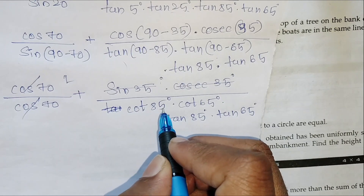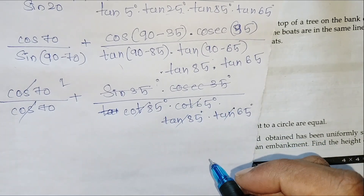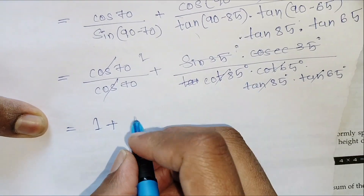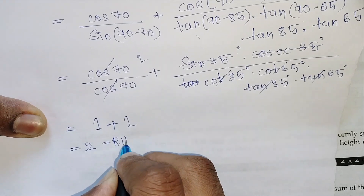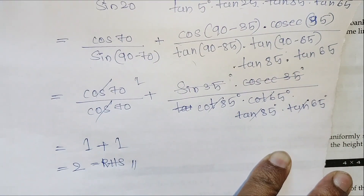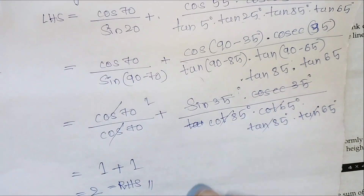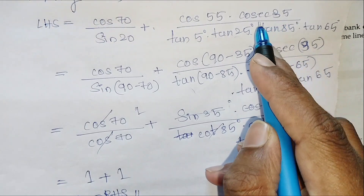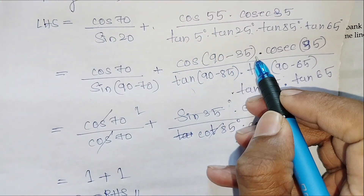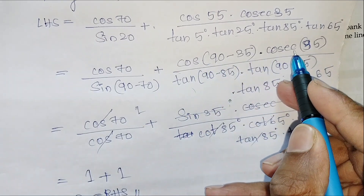Also, cot 85 into tan 85 can be cancelled, and cot 65 and tan 65 can be cancelled, each resulting in 1. So the first part gives 1 and the second part gives 1, and together that becomes 2, which equals RHS. This is how the problem works — it's very easy.